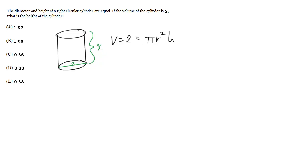So let's plug in our information here. So we know that 2 equals pi. What is the radius? Well the radius is just the diameter divided by 2, so it's just x over 2 squared. And then the height, which is x.